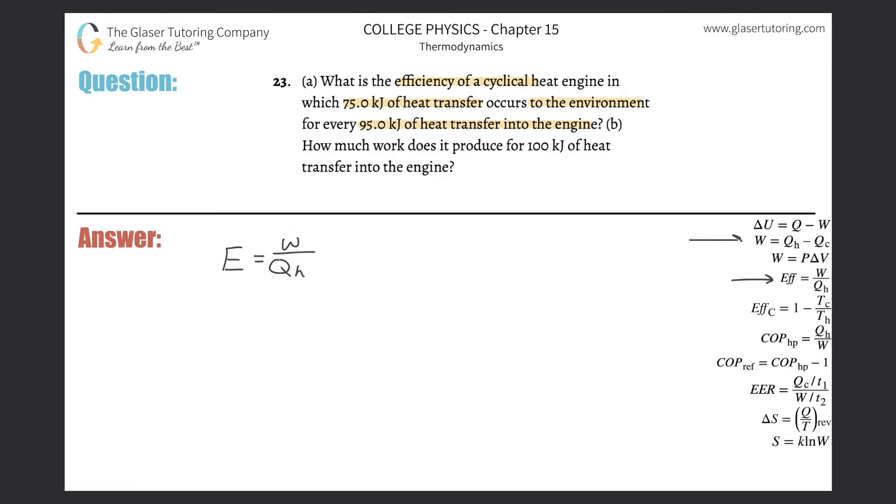So I know another formula that deals with cyclical engines, and it's going to be that the work is equal to Q sub H, meaning the heat of the hot reservoir, minus the heat of the cold reservoir. In other words, this is the heat put into the engine, and this is the heat given off into the environment by the engine.